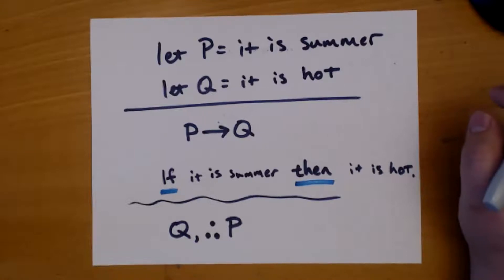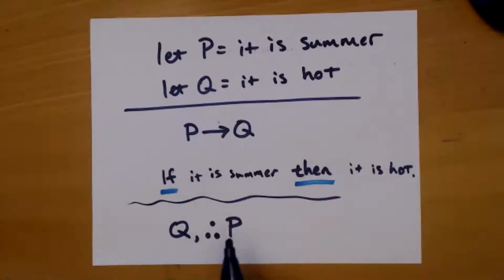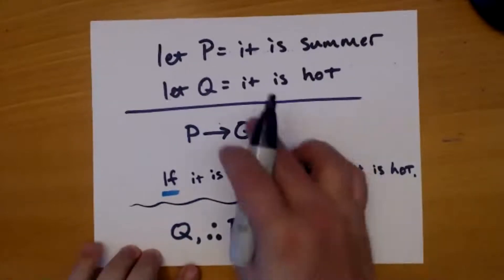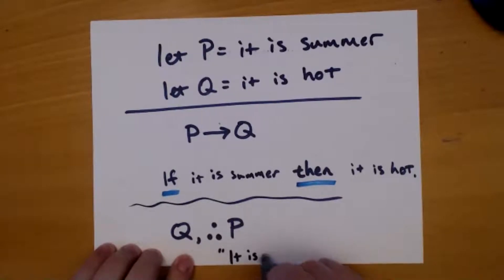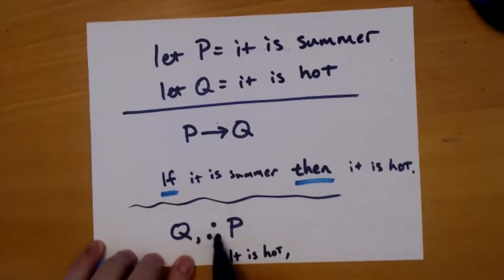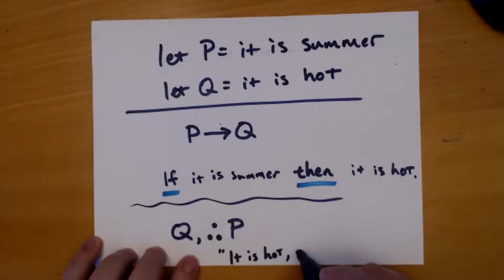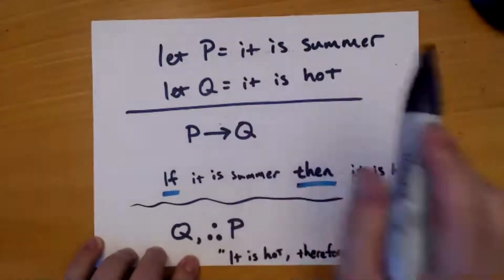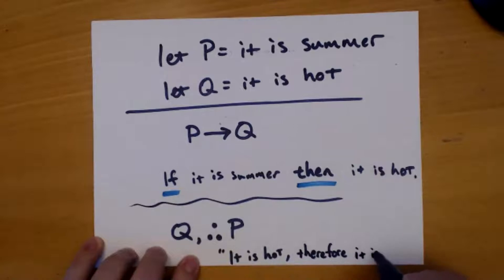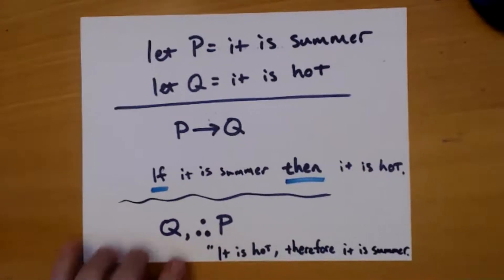Let's take a look at these symbols. How could I turn that into a sentence? I've got Q — 'it is hot' — and the triple dot, which is 'therefore,' and then P — 'it is summer.' So the sentence would be: 'It is hot; therefore it is summer.'